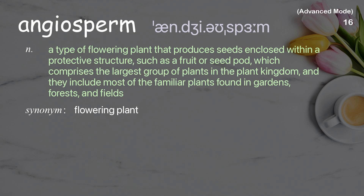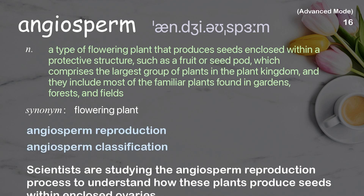Angiosperm: A type of flowering plant that produces seeds enclosed within a protective structure, such as a fruit or seed pod, which comprises the largest group of plants in the plant kingdom, including most of the familiar plants found in gardens, forests, and fields. Example: Scientists are studying the angiosperm reproduction process to understand how these plants produce seeds within enclosed ovaries.